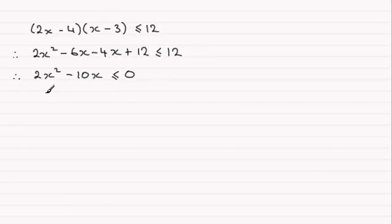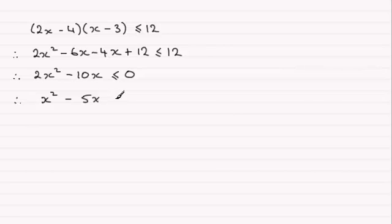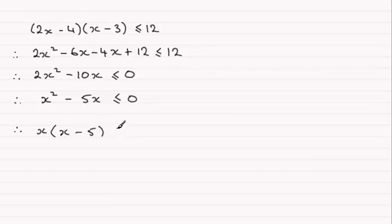We could divide through by 2 at this stage — it's not required, but 2 is a common factor — giving us x squared minus 5x is less than or equal to 0. Factorizing this by pulling out x as a common factor, we have x times (x minus 5) is less than or equal to 0.